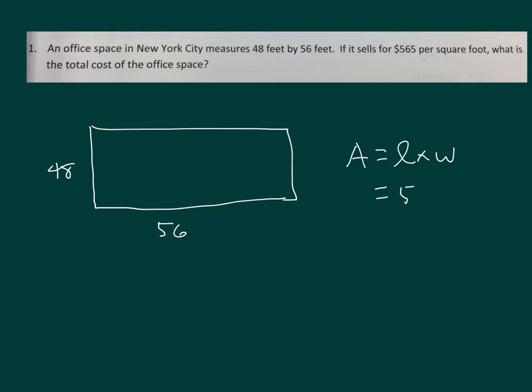Let's work that out. 8 times 6 is 48, 8, regroup of 4. 8 times 5 is 40, plus 4 is 44. Place a 0. 4 times 6 is 24, 4, regroup of 2. And 4 times 5 is 20, plus 2 is 22. And then I can go ahead and add those two together. 2,688 square feet.